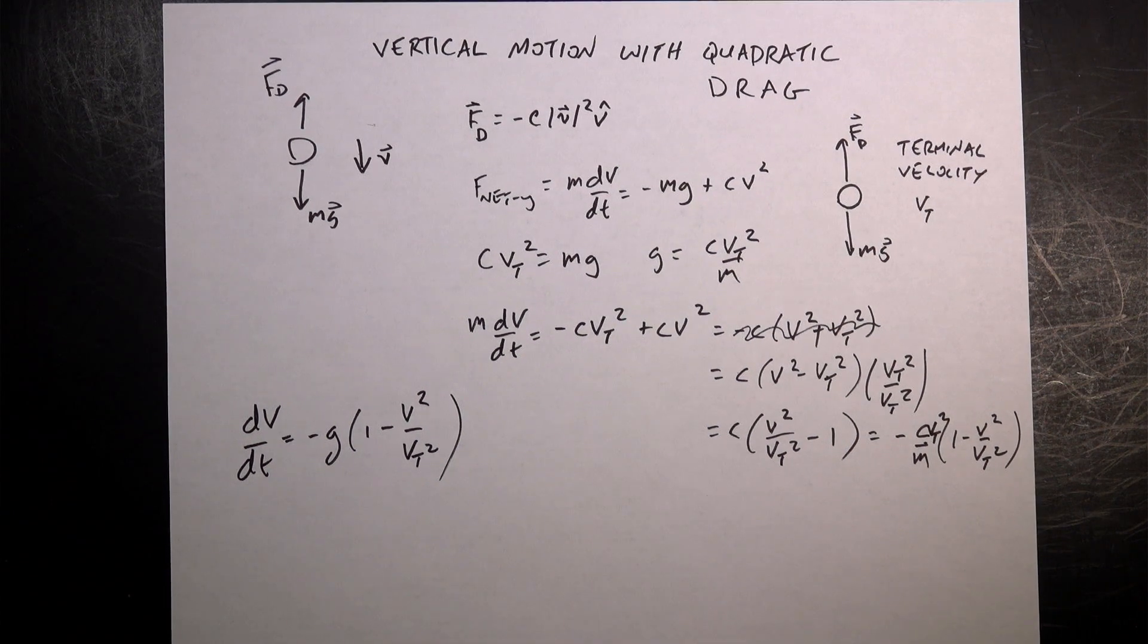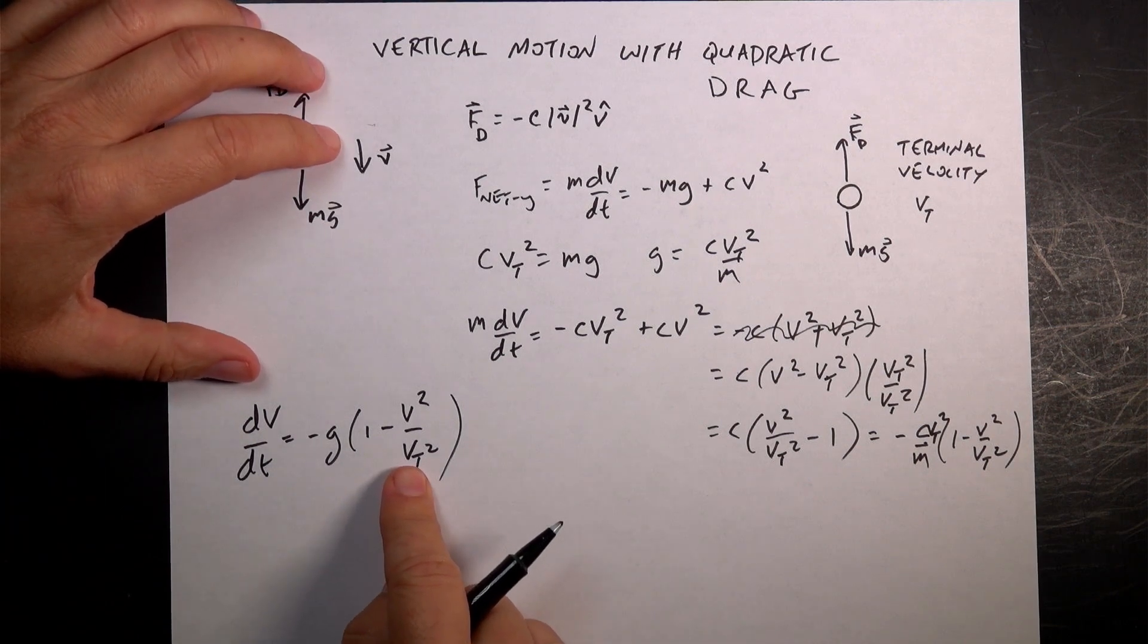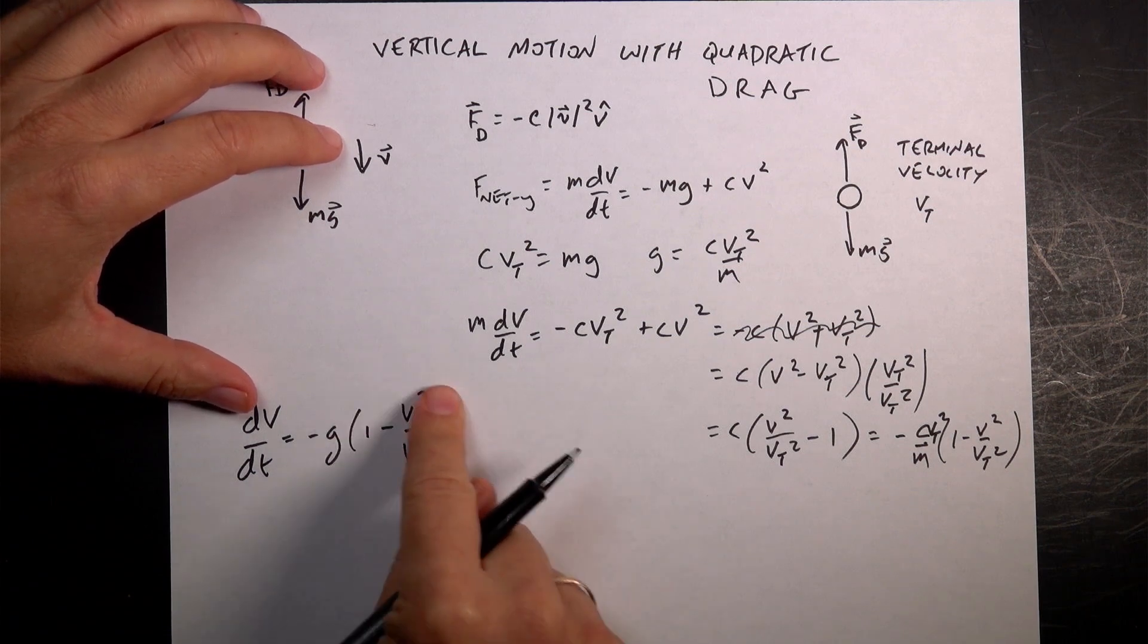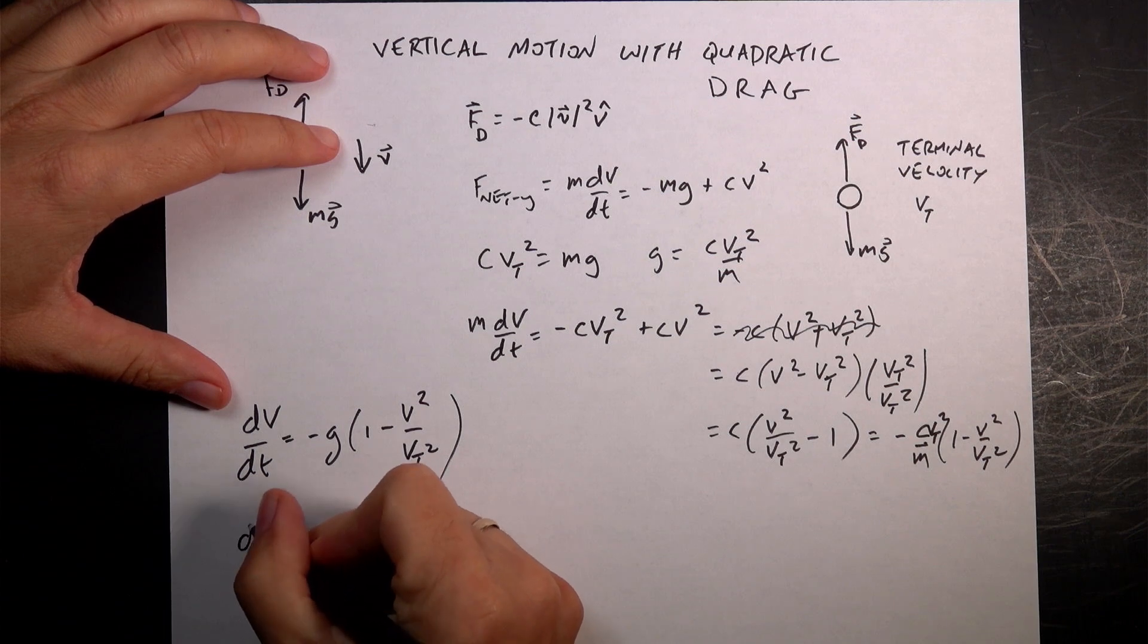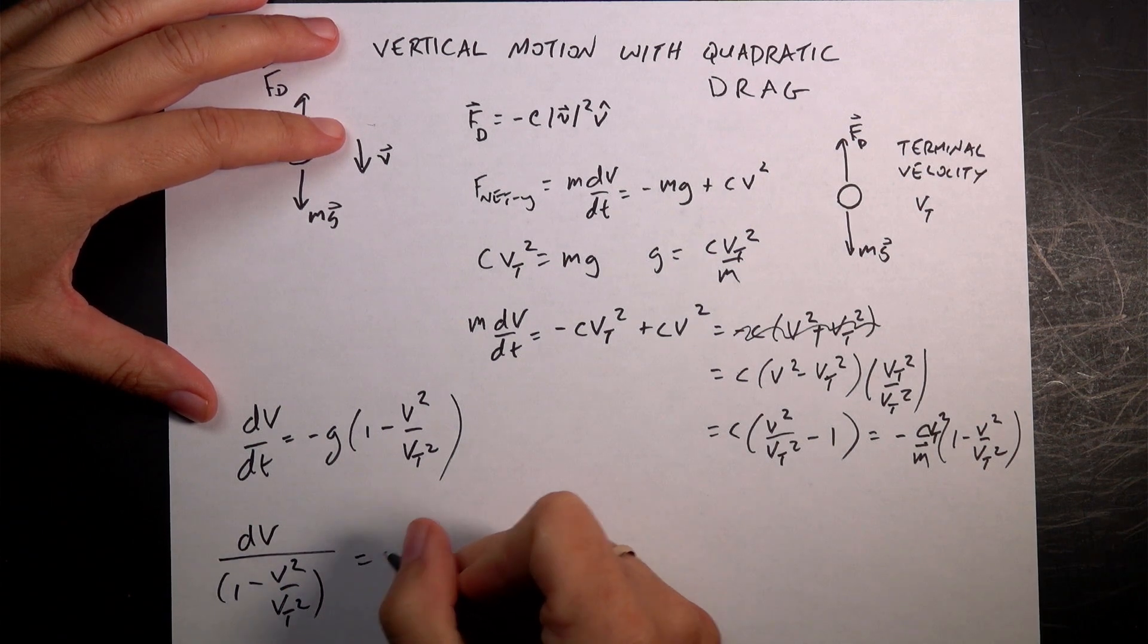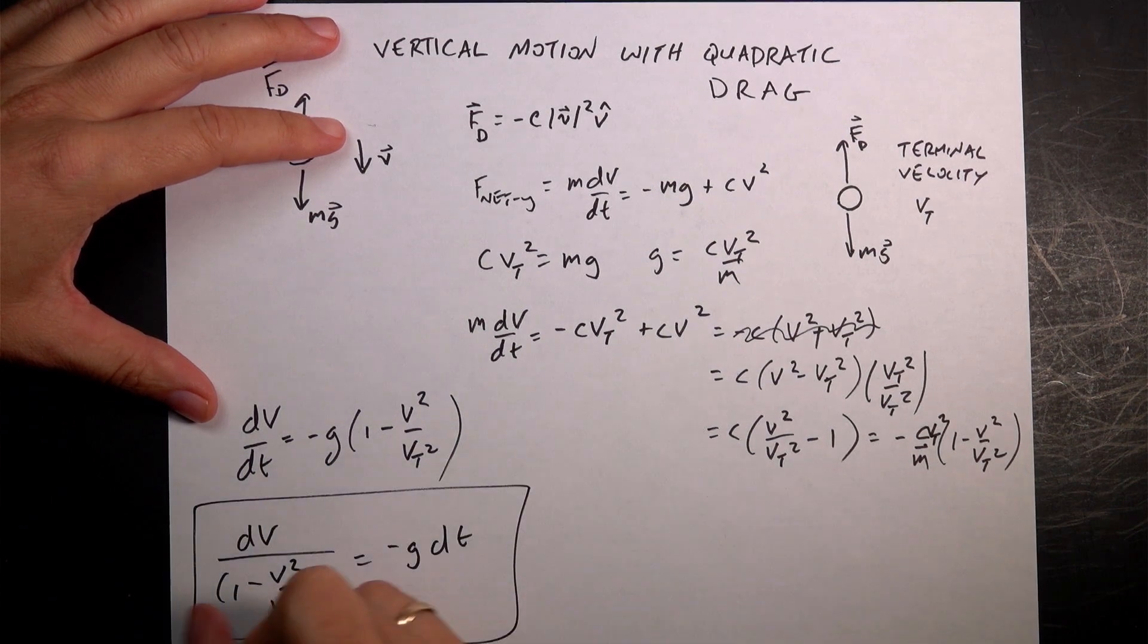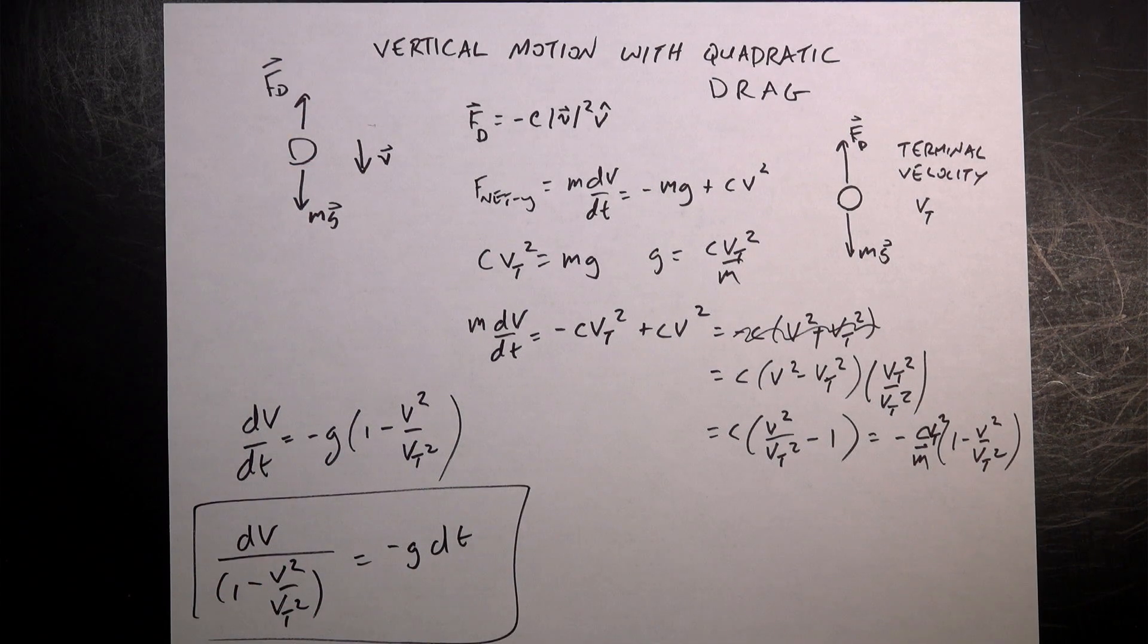Okay, so now I have dv dt equals negative G, 1 minus v squared over vt squared. Okay, I'm happy with that. I mean, it's still not nice, right? But we can proceed a little bit. So now let's get these terms separated. So if I rewrite this, if I divide both sides by this, I multiply both sides by dt, I get dv over 1 minus v squared over vt squared equals negative g dt. And so that's something, now I have all the t's on one side, all the v's on the other side. I can integrate both sides as hard as that may be.